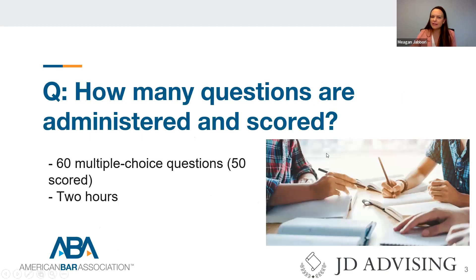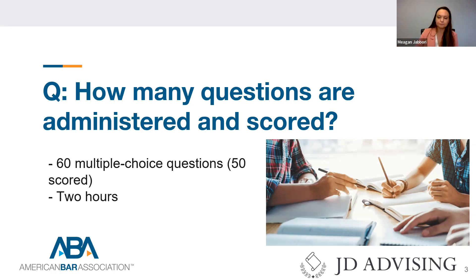Our next frequently asked question is: how many questions are actually administered for this exam and how many are actually scored? This is a great question because it should impact how you study and score yourself with practice or simulated exams. The MPRE consists of 60 multiple choice questions, but only 50 of the 60 are scored. This exam is administered over two hours, assuming you do not have any sort of extensions or accommodations. Because there are 10 experimental questions, we recommend you answer every single question as best as you can.